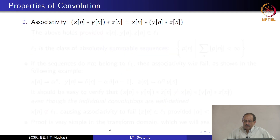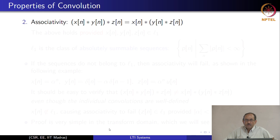The next property is associativity of convolution. x convolved with y convolved with z is the same as x convolved with the quantity y convolved with z, and this is similar to the property in continuous time. One way of seeing this is that if you convolve in time you multiply in the transform domain, and multiplication is associative. Hence, associativity of convolution can be seen by looking at the corresponding behavior in the transform domain.